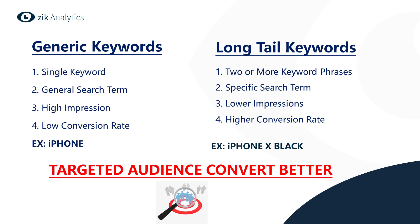Then we have long tail keywords, which are two or more keyword phrases. For our example we have iPhone X black or iPhone X green. These are more specific terms, which gives us lower impressions but a higher conversion rate. Because when someone goes to eBay and searches for a very specific item, that means they're there to shop — they are there to buy it — which results in a higher conversion rate. Always keep in mind that a targeted audience converts better.